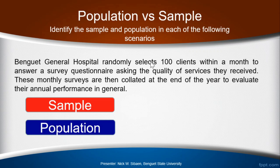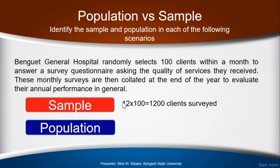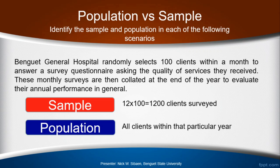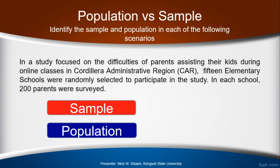Our sample is actually given in the problem — Baguio General Hospital selects 100 clients in a month. But since the evaluation is done annually, the sample should be the 1,200 clients surveyed in one year — that's 12 months times 100 per month. The population is all the clients of the hospital within that particular year.